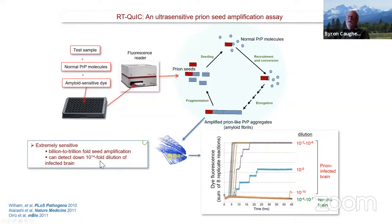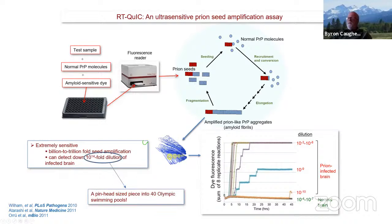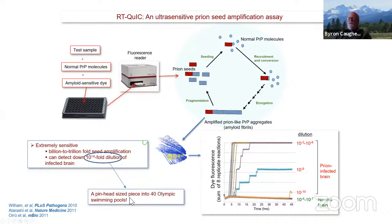What does this really mean in practical terms? It means essentially that if you take a pinhead-sized piece of brain, mush it up and dilute it into 40 Olympic swimming pools, then take a tiny volume out of that pool, you can still detect the prions. It's extraordinarily sensitive. These assays are getting faster and faster — usually taking one to two days. Importantly, from a practical point of view, the amplified products are not infectious, as we've shown very recently. You don't want to be amplifying massive amounts of prion infectivity every time you run these assays in a diagnostic lab.